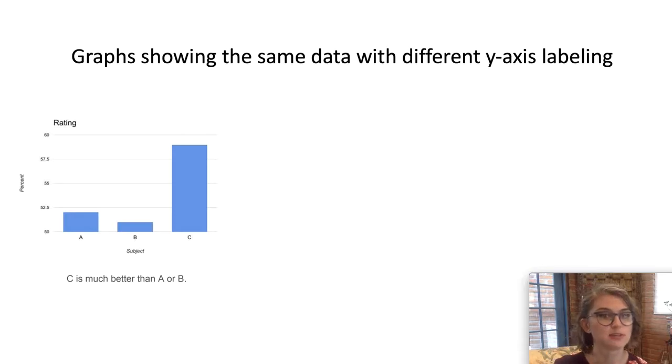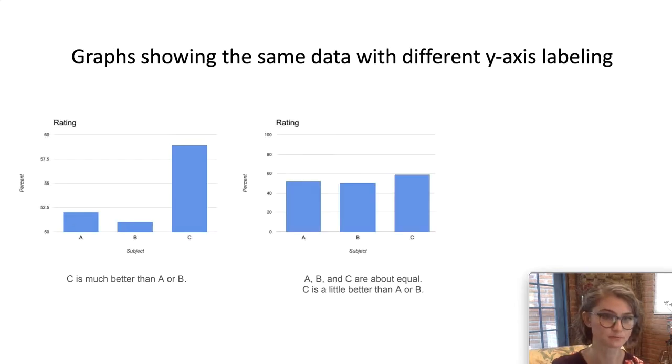If we rescale the y-axis to go from 0% to 100%, it turns out that A, B, and C are about equal. Sure, C is a little bit better, but certainly not as much better as this first chart implied.